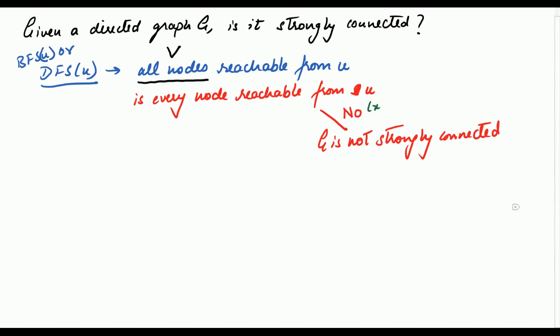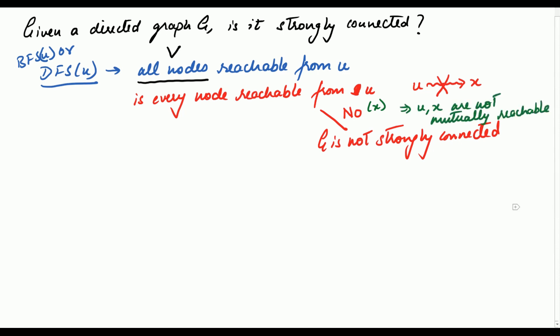For example, suppose node X was missing from this set of nodes. That means there is no path in the graph from U to X, and that gives you a pair of nodes U and X which are not mutually reachable. The existence of one such pair is sufficient to conclude that the graph is not strongly connected. So if the set given by the algorithm does not comprise the entire vertex set, you can straight away conclude the graph is not strongly connected.